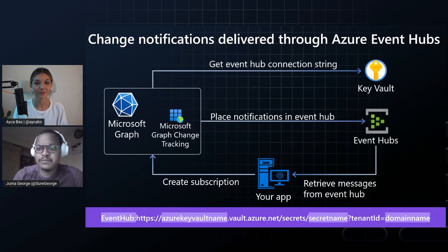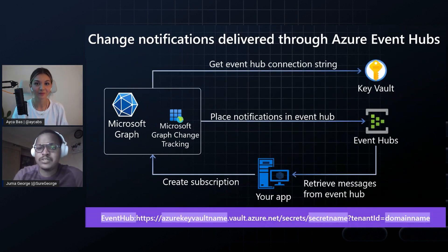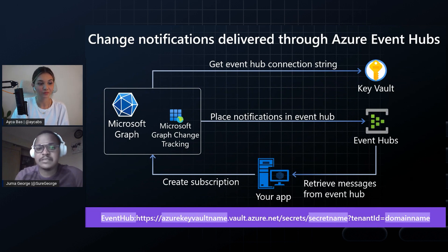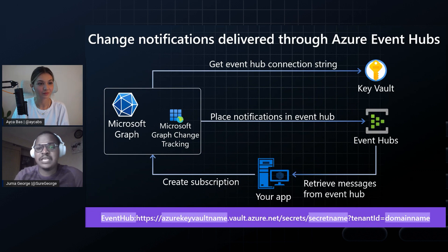The first step, as I mentioned, is you will have to create an Azure Event Hub. Once you create it, the next step is just create the Key Vault, get the Event Hub connection string, and load it to the Key Vault. After that, the next step is just create a subscription to the specific resource you want to listen to. For instance, if you wanted to listen to a Teams conversation, you will create a subscription using the notification URL in your subscription payload. Every time there's a change in the resource you've subscribed to, you will be able to get notifications through Event Hubs all the way to your app, and then you can consume the notification however you like.